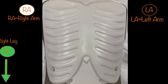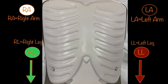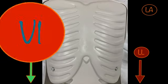Limb leads can be placed on the appropriate limbs. Lead V1 is in the fourth intercostal space, right sternal border. Lead V2 is in the fourth intercostal space, left sternal border.